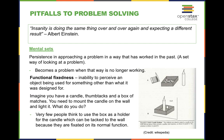Let's talk about a pitfall to problem-solving: functional fixedness. This is some people's inability to see things being used for anything other than what they were intentionally supposed to be used for. For example, if you have some matches, a box of thumbtacks, and a candle, and I ask you to mount that candle on a wall and light it, someone with functional fixedness might think they have no candle holder. But a creative thinker would use the box the thumbtacks came in and place the candle in it so it would stand up.